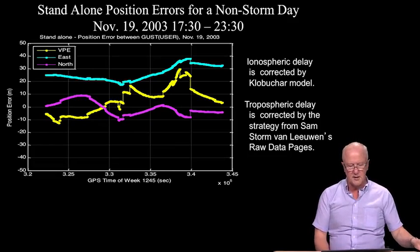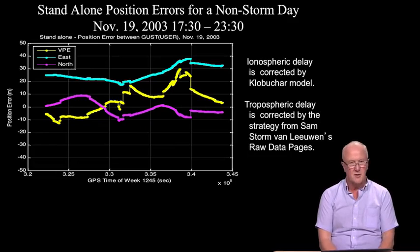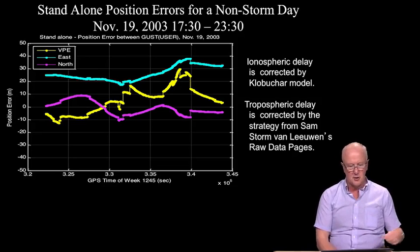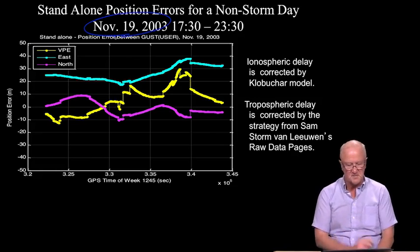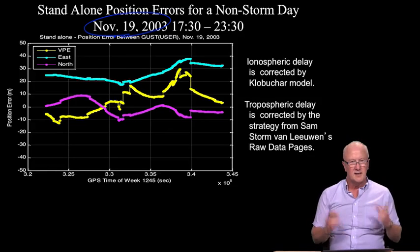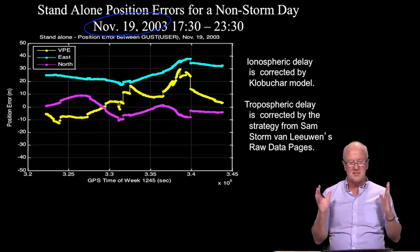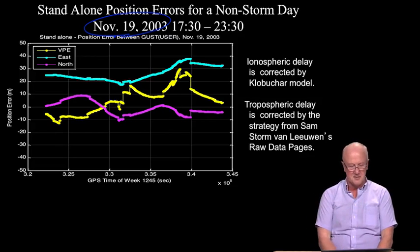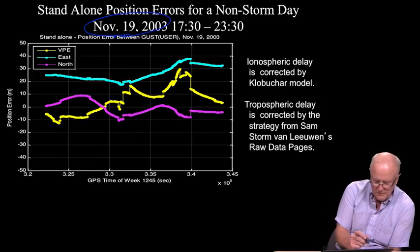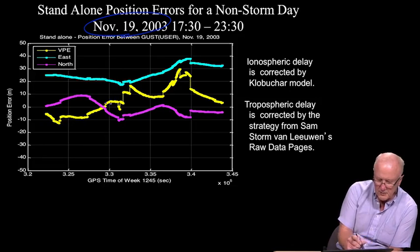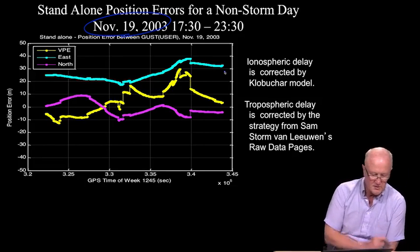Here are results for a receiver in Ohio, right in the middle of those very steep gradients. These are shown for six hours on November 19, 2003 — very close to some of the most famous ionospheric storms seen globally. This is still stand-alone, so we're not making any effort to improve performance with differential GPS. Notice that in vertical (yellow), north (purple), and east (light blue), we're suffering errors of tens of meters.